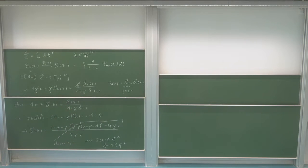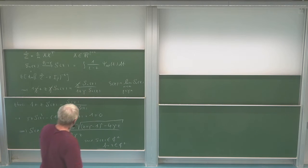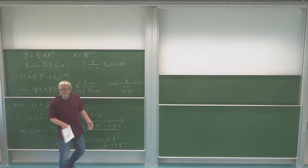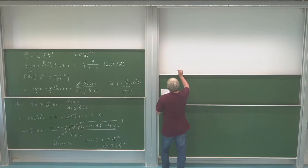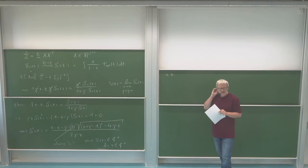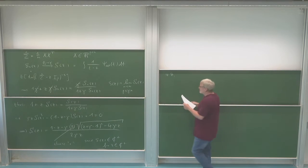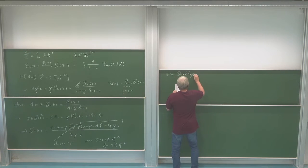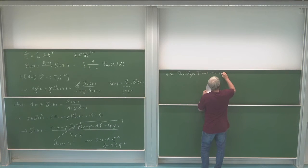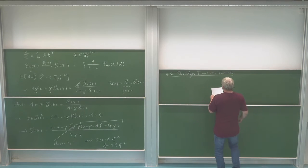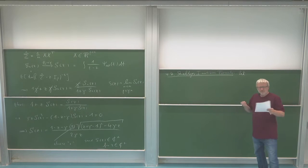Rather than just verifying the formula, it is more satisfying to derive the Marchenko-Pastur density directly from the Stieltjes transform. This is done via the Stieltjes inversion formula, which tells us how to recover the density from the Stieltjes transform. Let me state and prove this formula.